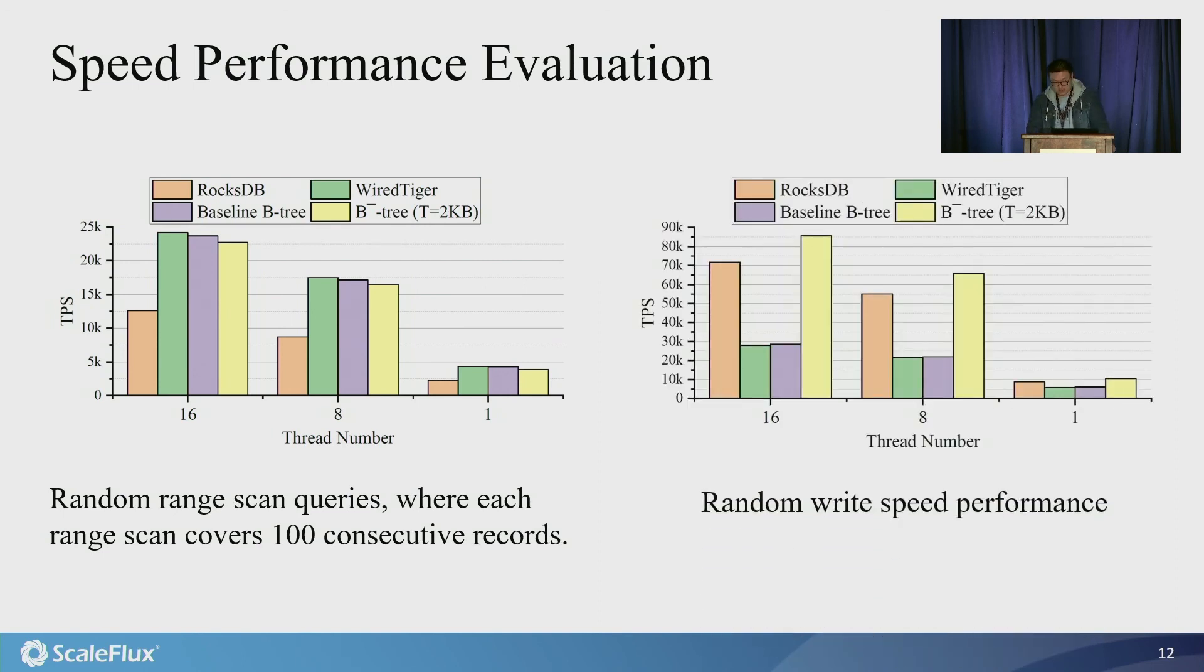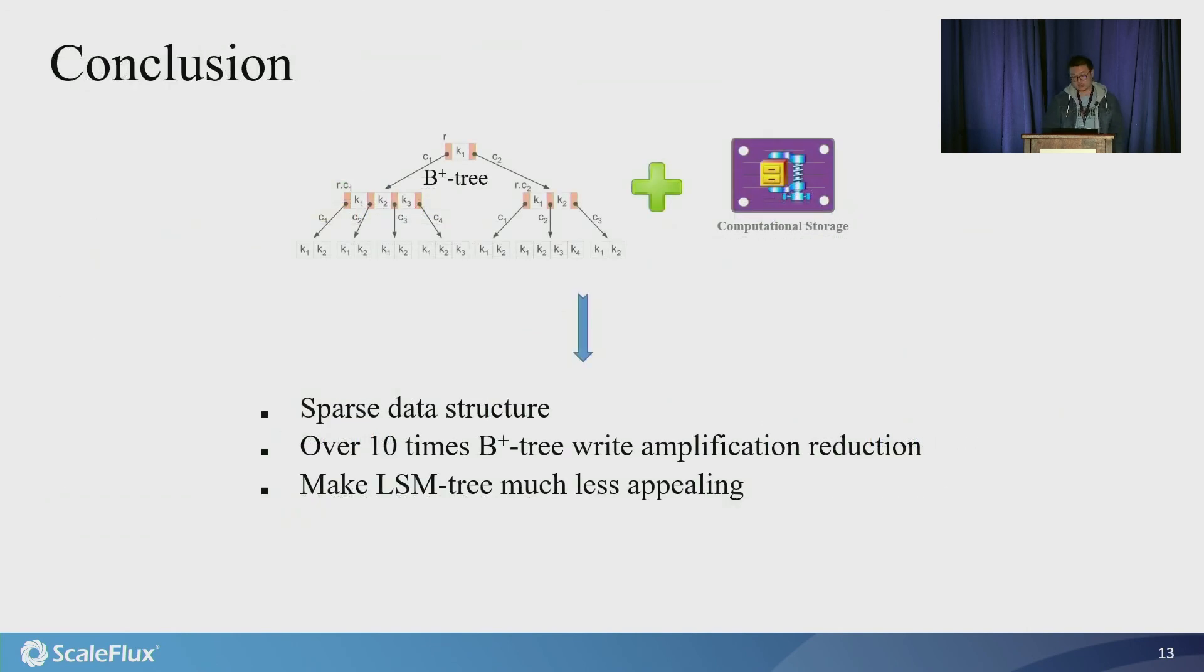And here is the random write speed performance. The performance of B+ tree and LSM tree is fundamentally limited by the write amplification. Therefore, by significantly reducing the write amplification, B-minus tree should be able to achieve much higher write speed performance.